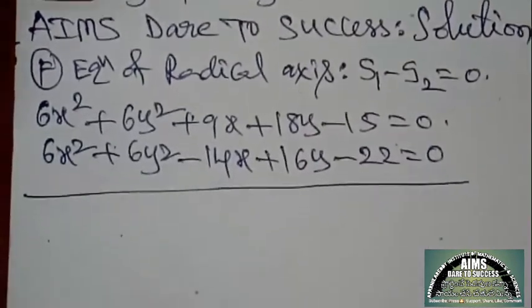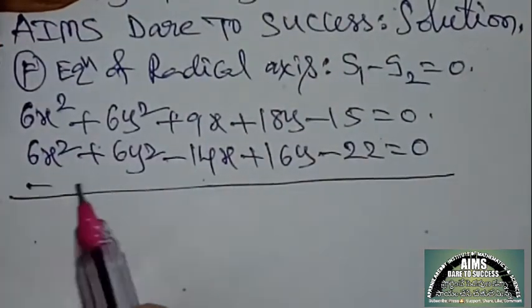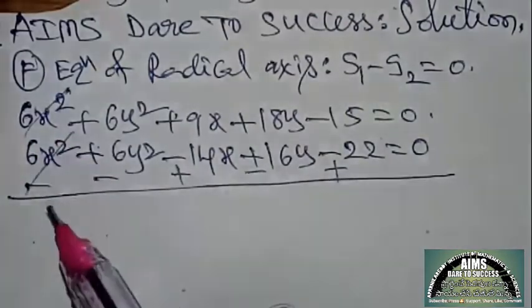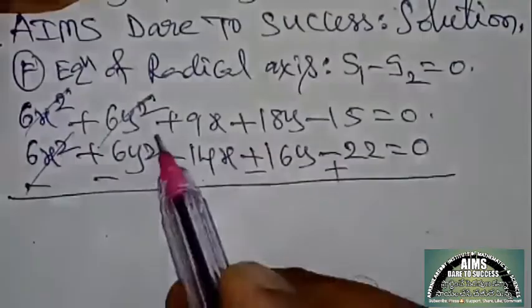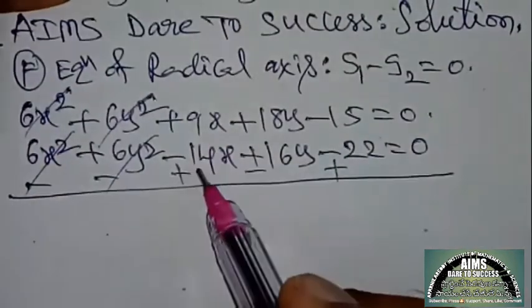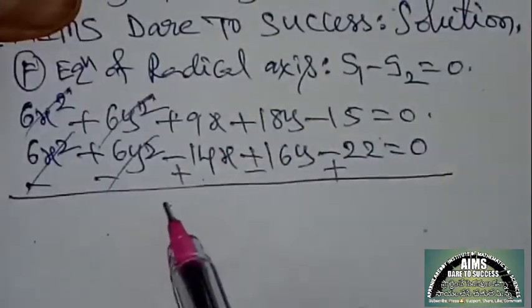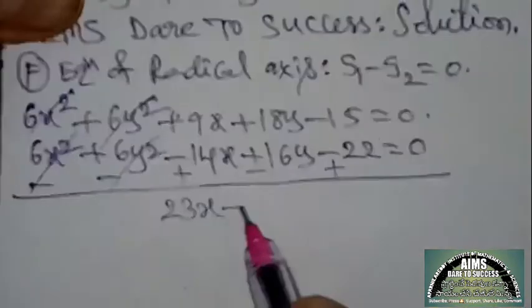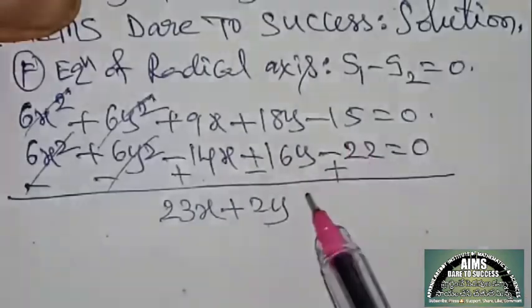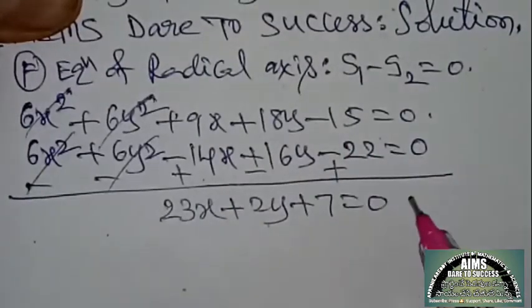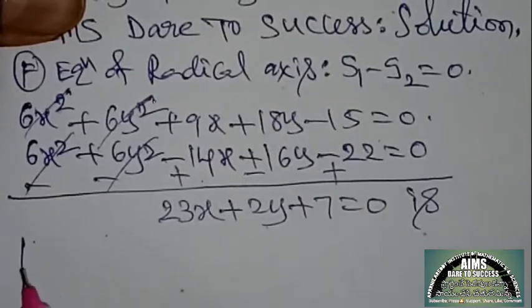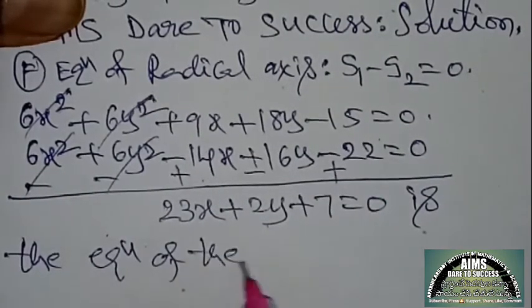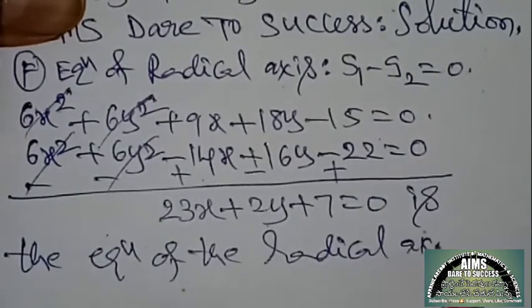Next, the relation is minus — subtract. Take opposite symbol. 6x² and 6x² cancel; 6y² and 6y² cancel. 14 + 9 = 23x; 18y − 16y = 2y; 22 − 15 = 7. So 23x + 2y − 7 = 0 is the equation of the radical axis.